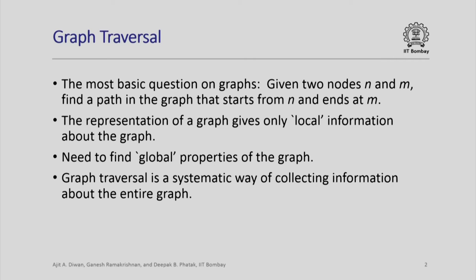The representation of a graph gives us only local information about the graph. For every node it tells us which nodes are its successors, or given two nodes it tells us whether one is the successor of another. But the properties of a graph that we are interested in are inherently global properties. Existence of a path, for example, is a global property — just by looking at the successors of a given node we cannot say whether there is a path from node n to node m. We need to go through all the nodes in the graph.